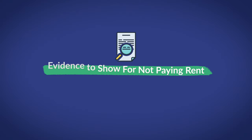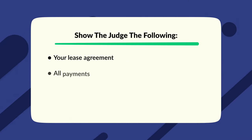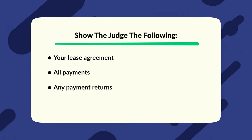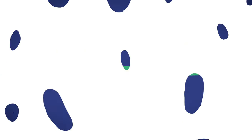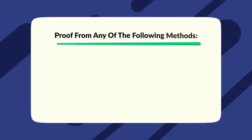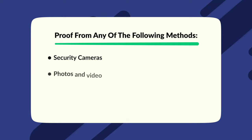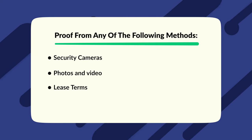Evidence to show for non-payment of rent: if the tenant doesn't pay rent and they dispute that claim, it's important to show the judge your lease agreement, all payments, any payment returns, and all messages. Evidence to show for lease violations: if you are evicting the tenant for lease violations — for example, noise complaints or unauthorized pets — it's important to show proof from security cameras, photos and videos, and your lease terms.